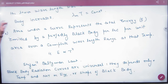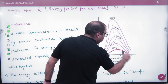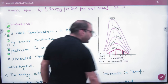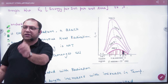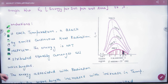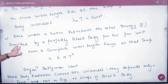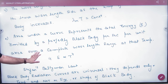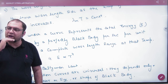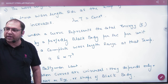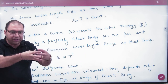The area under the graph gives the total energy emitted per second per unit area by the perfectly black body. This area represents the total energy E, which is directly proportional to temperature raised to power 4 — E ∝ T⁴. This matches Stefan's Law, confirming that both Stefan's Law and Wien's Law are consistent with each other.